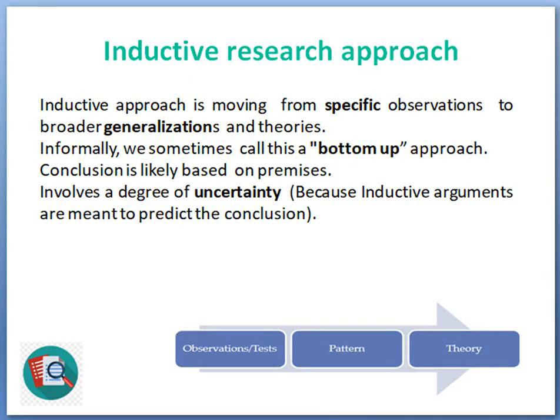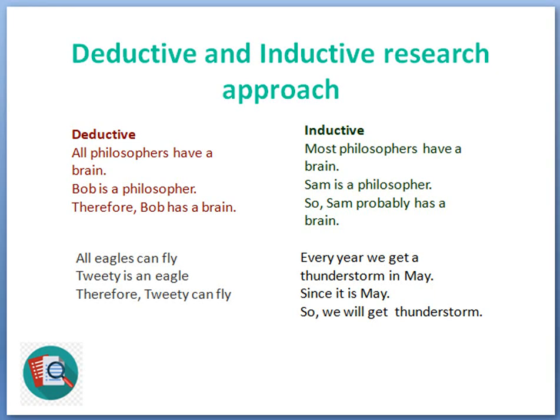Another deductive example: 'All eagles can fly; Tweety is an eagle; therefore Tweety can fly' — moving from general to specific. An inductive example: 'Every year we get a thunderstorm in May; it is May; so we will get a thunderstorm' — here we move from a specific pattern to a general prediction, and there is a degree of uncertainty in the conclusion.